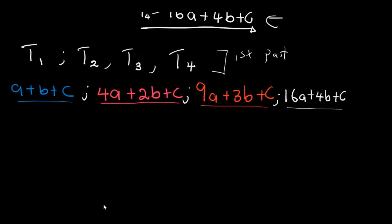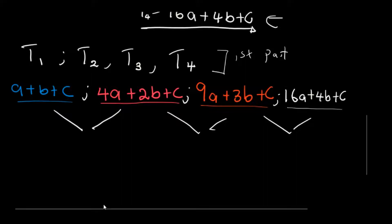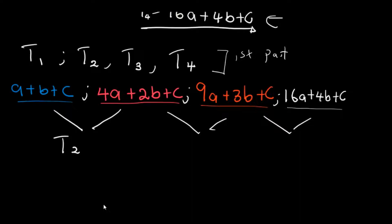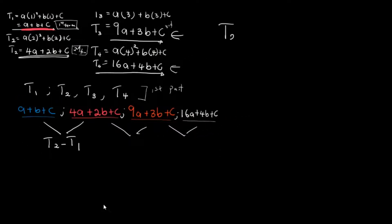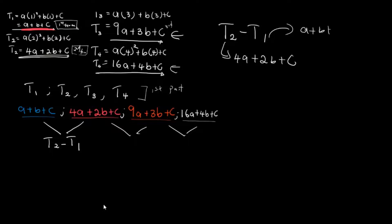Let's find the first differences. We'll calculate T2 minus T1 aside. T2 is 4a + 2b + c and T1 is a + b + c. So we write (4a + 2b + c) minus (a + b + c).